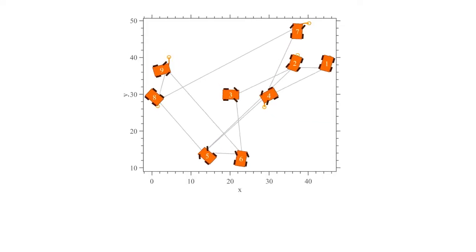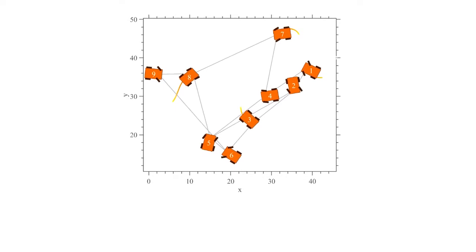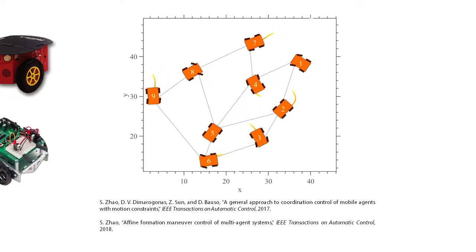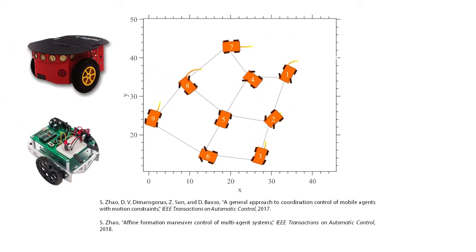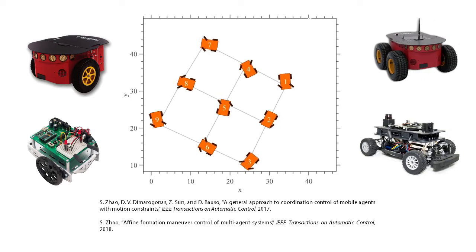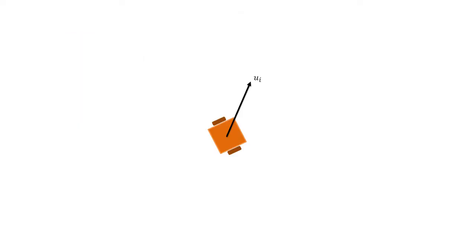To apply the control for agents with non-holonomic dynamics, we use an approach inspired by Javed et al. for unicycles and present a novel extension for agents with car dynamics. In this approach, the control vector for single integrator agents is projected onto the heading direction and perpendicular heading direction of each vehicle. The length of the projected vector on the heading direction determines the linear velocity and length of the projection on the perpendicular direction determines the angular velocity of each agent.